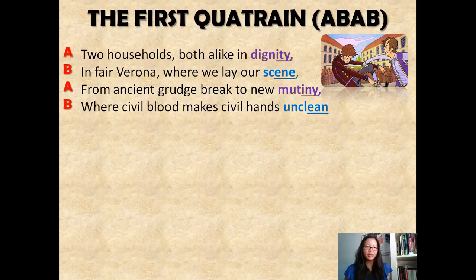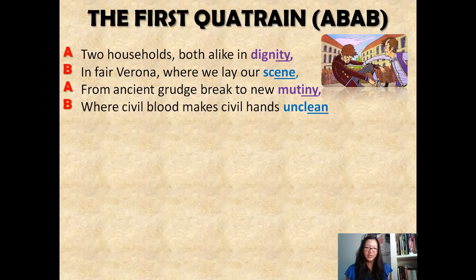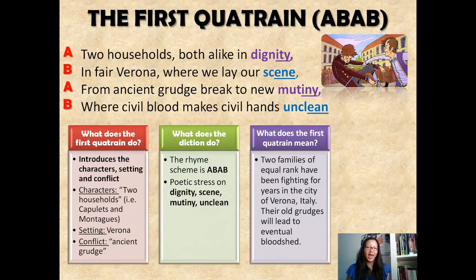Following the story plot diagram and looking at what it's introducing, we see that two characters are introduced — the Capulets and the Montagues. The setting is in fair Verona, and the conflict is the ancient grudge going on between the two families. The rhyme scheme is ABAB, with poetic stress on 'dignity,' 'scene,' 'mutiny,' and 'unclean.' Altogether, this means two families — the Capulets and Montagues — have been fighting for years in the city of Verona, Italy, and their grudges are going to lead to bloodshed.